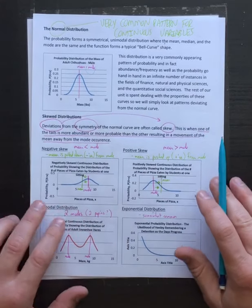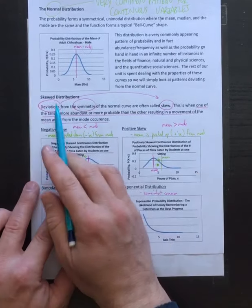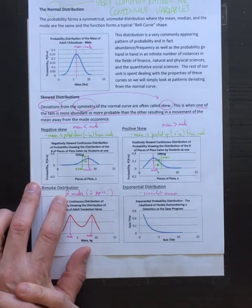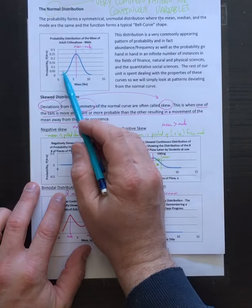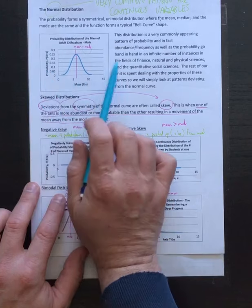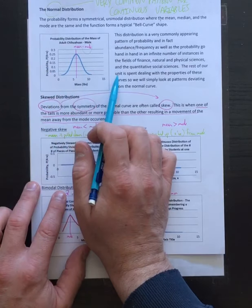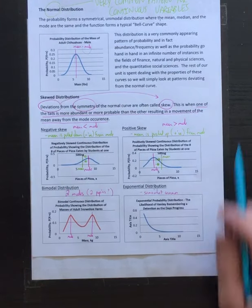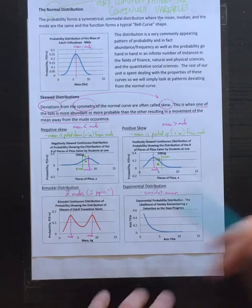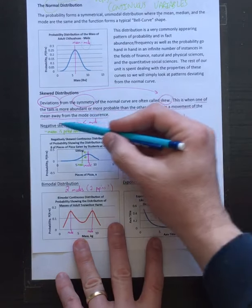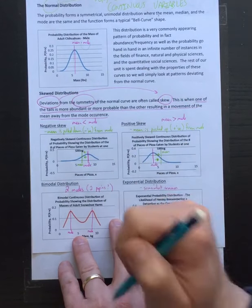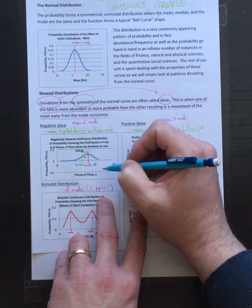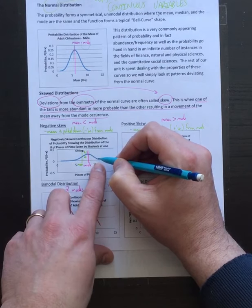We also learn something called skew from that distribution. When we look at other types of distributions, one example is a skew: if we make the left-hand side bigger than the right, or vice versa, we get what's called a skew. That's a really important idea to be familiar with heading into university. There's a negative skew and a positive skew, and it centers on the relationship between the mean and the mode.